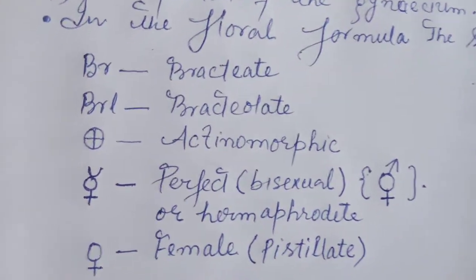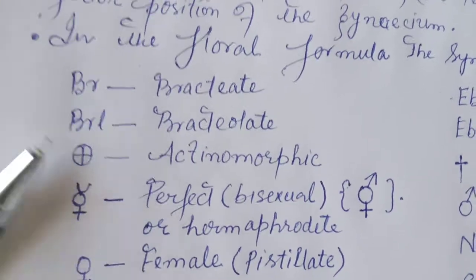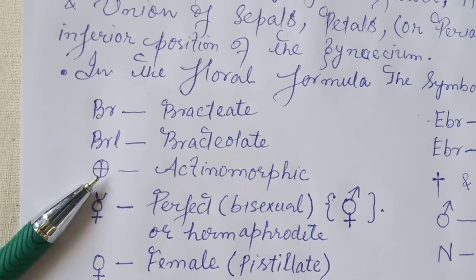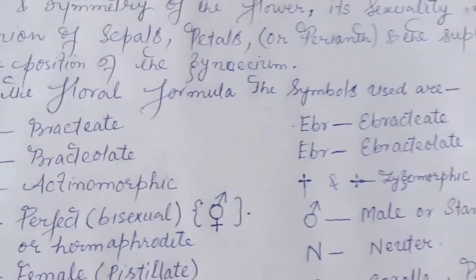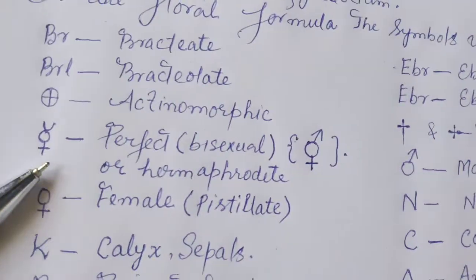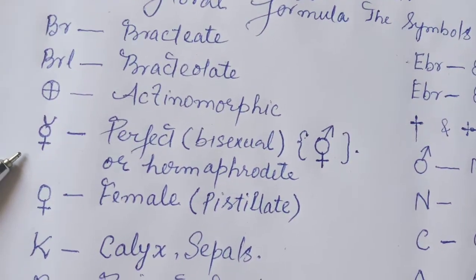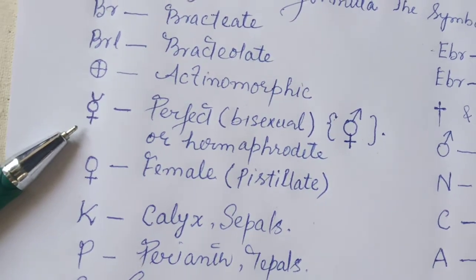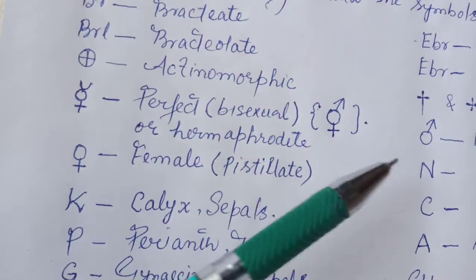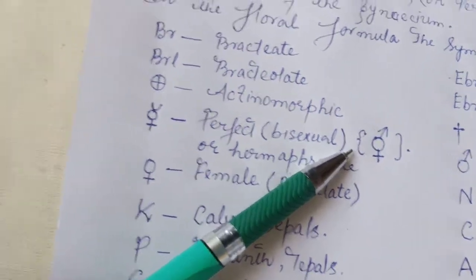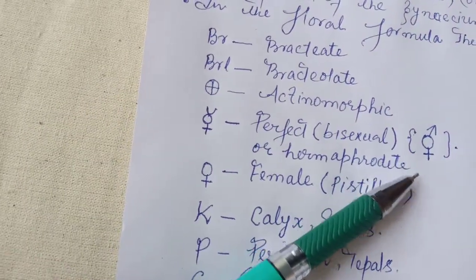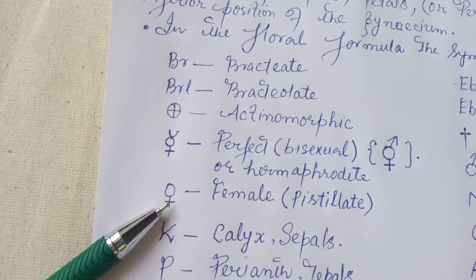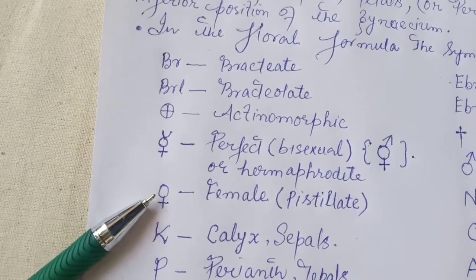Similarly, this symbol is used for actinomorphic flowers having many planes of symmetry. This symbol is for a perfect or bisexual flower, also known by the hermaphrodite name, and this symbol is commonly used for hermaphrodite flowers. This symbol is for female or pistillate (unisexual female) flower.